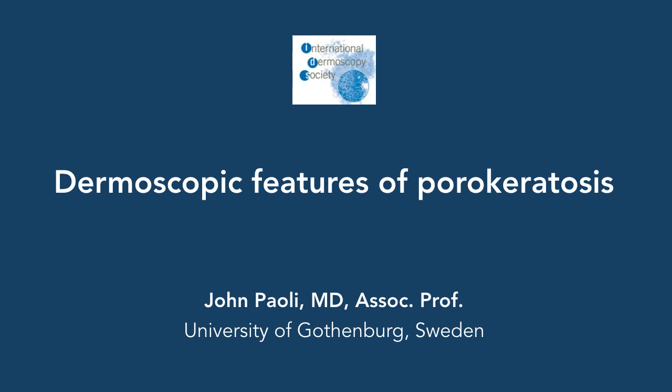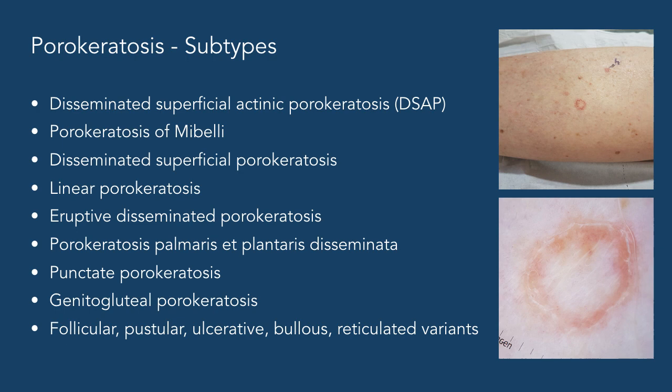As you know, porokeratosis are benign lesions of unknown etiology manifesting with aberrant keratinization. There are many clinical variants seen here. Some variants are acquired and some are inherited. In this podcast, we will mainly show cases of the two most common types: porokeratosis of Mibelli and disseminated superficial actinic porokeratosis. Nevertheless, the dermoscopic features are very similar in all the different clinical subtypes.